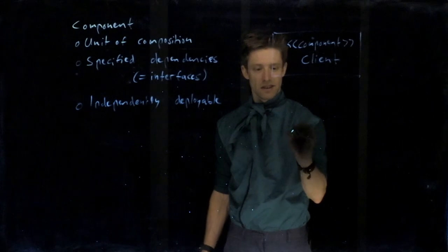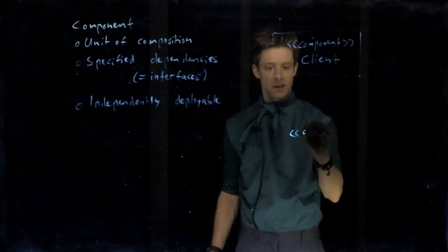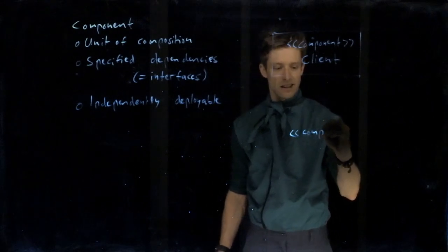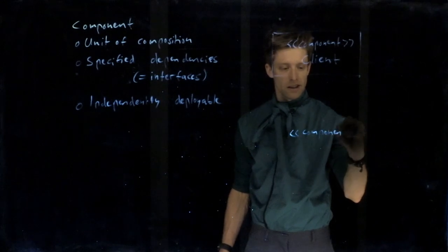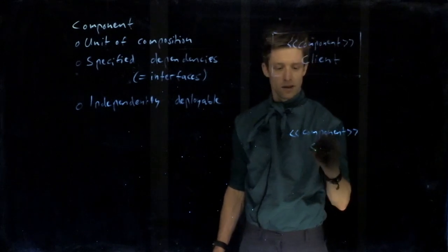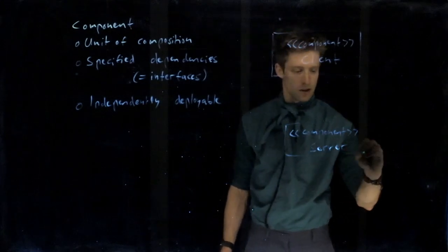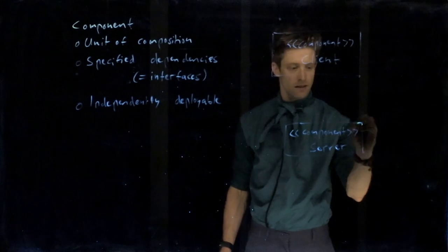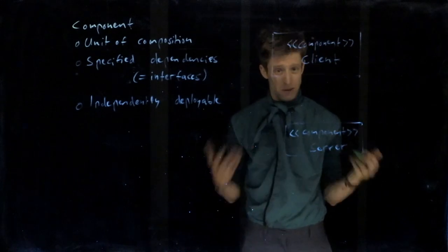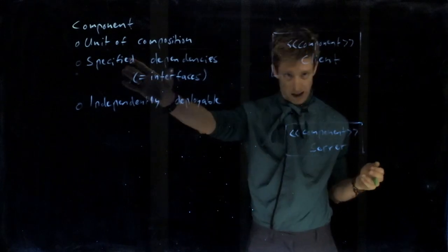And then, let's say we have a server. We don't go into details on what exactly they do. So we have another component. Server. Just boxes. And they should communicate. So what is about the dependencies?